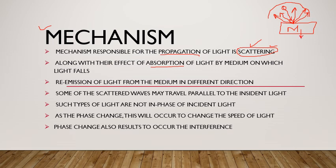اس material کا color کچھ بھی ہو سکتا ہے، اس کا مطلب یہ نہیں کہ صرف scattering ہوگی۔ جب incident light اس material کی surface پر پڑتی ہے تو اس میں سے کچھ light material کے اندر absorb ہو جاتی ہے اور کچھ light different directions میں scattered ہو جاتی ہے۔ یعنی scattering کے ساتھ ساتھ absorption کا phenomena بھی ہو رہا ہوتا ہے۔